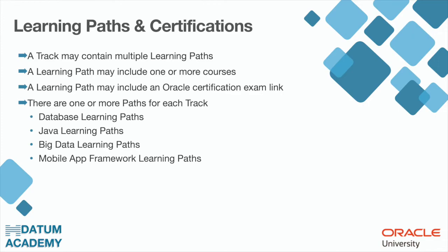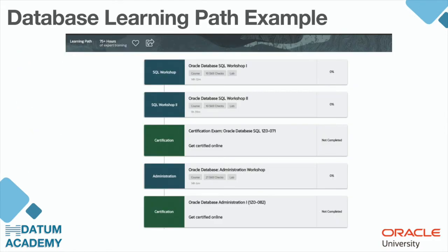In your learning subscription you also have learning paths and certifications. A track may contain multiple learning paths, and a learning path may include one or more courses and an Oracle certification exam link. For example, here we are taking the database learning path. All the courses above the certification must be taken to be able to pass the certification. For instance, in order to pass the Database Administration 1 certification, you have to take the course Oracle Database Administration Workshop.